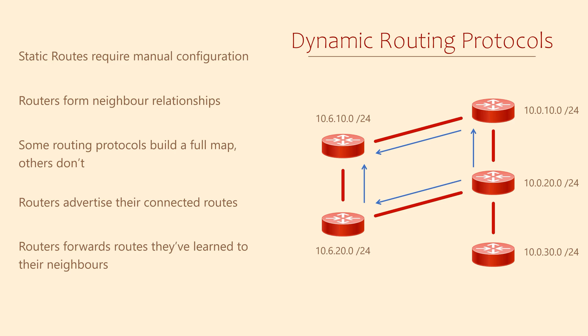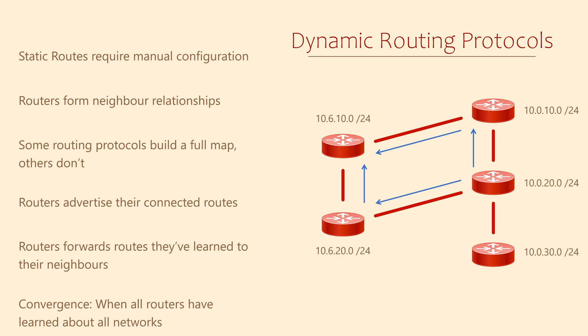Convergence is the term we use when the network has finished learning about all the routes. After the network has converged, routers continue to advertise their networks — this is their way of saying they're still here.